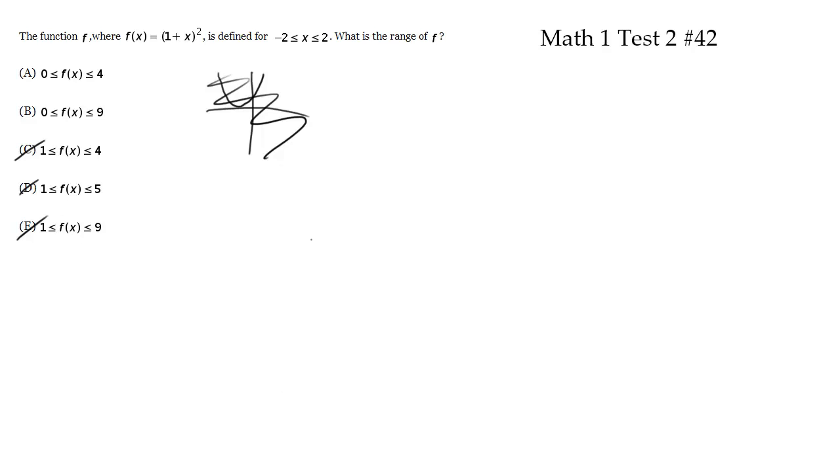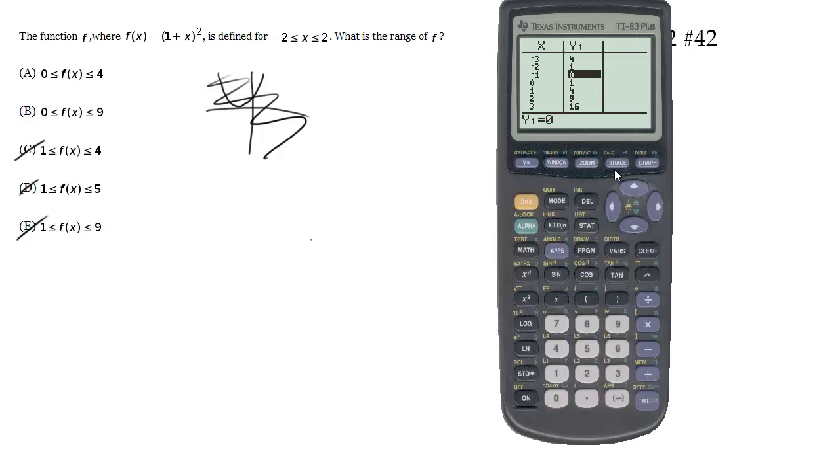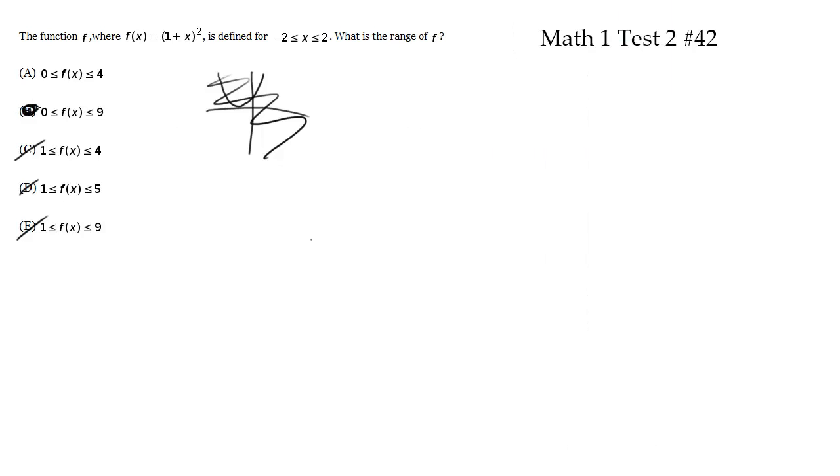So right away, c, d, and e are out of the picture. Now we're going to continue increasing until we get up to 2. And notice 2, we go up to y equals 9. So of course, that's going to be choice B.